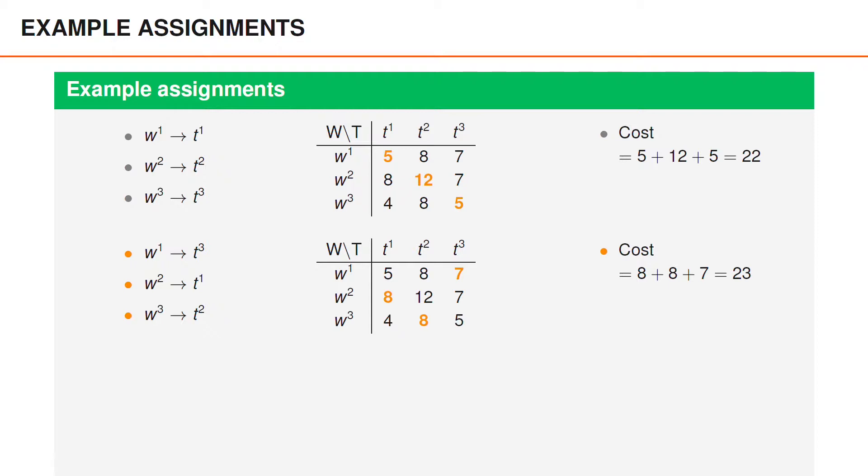Another possible assignment is that worker 1 solves task 3, worker 2 solves task 1, and worker 3 solves task 2. And this assignment has cost 23.